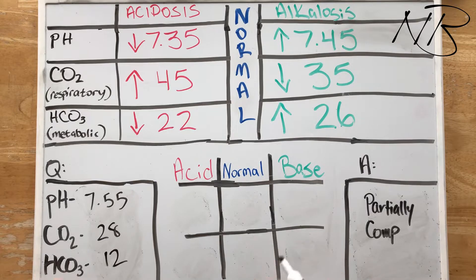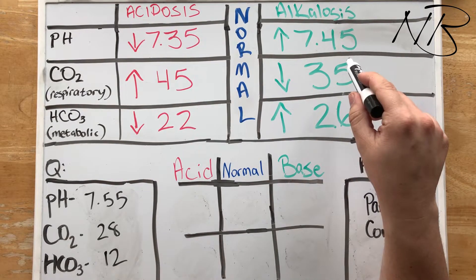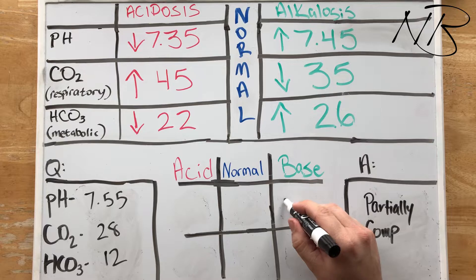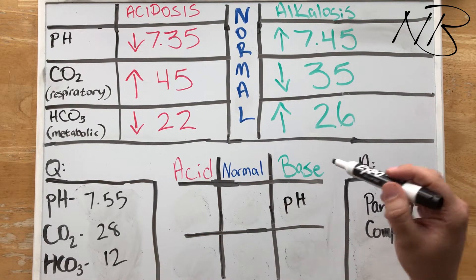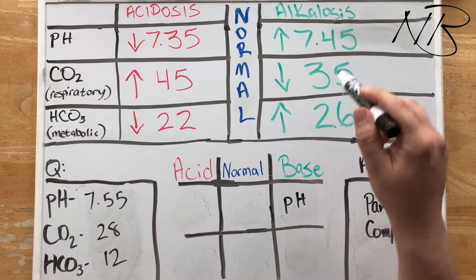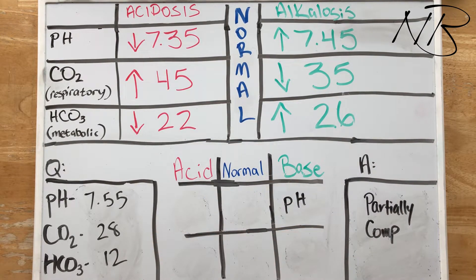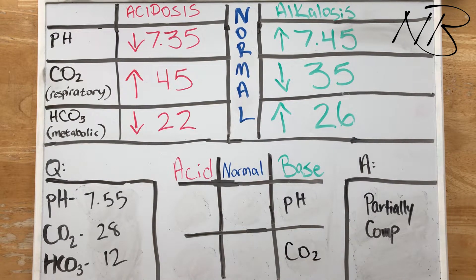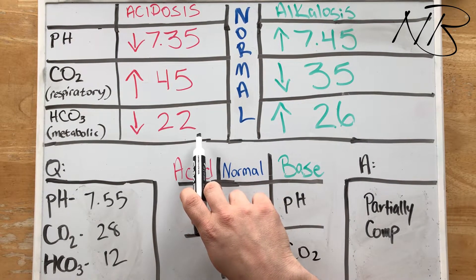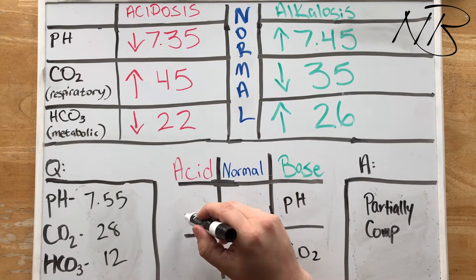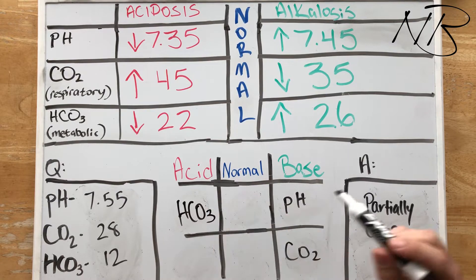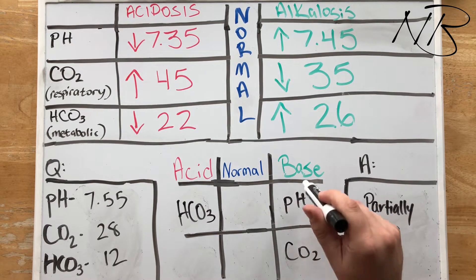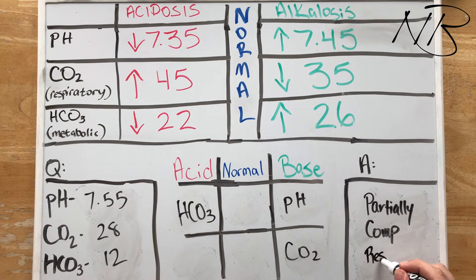So for our third question, we have a pH of 7.55. That's going to fall in our alkalosis column. And hopefully at this point, you guys are beginning to be able to quickly recognize what columns these are falling underneath. Next, our CO2 is 28. That's less than 35, so that's going to fall in our alkalosis column. And our bicarbonate is 12, which is far less than 22, so that's going to go in our acid column.